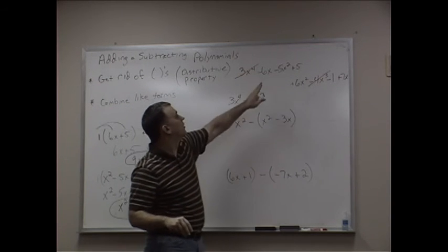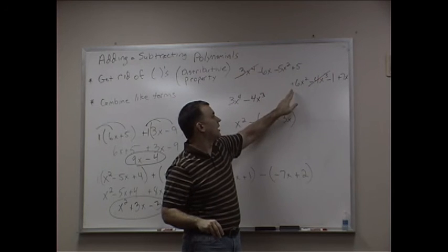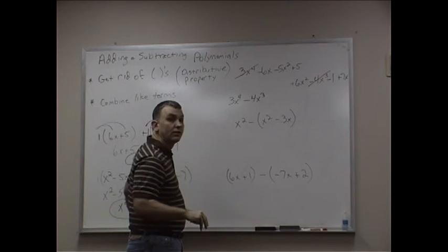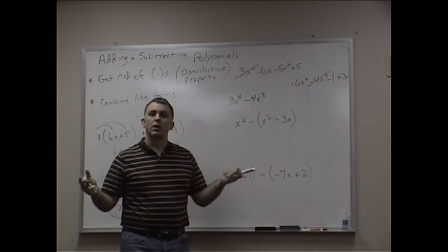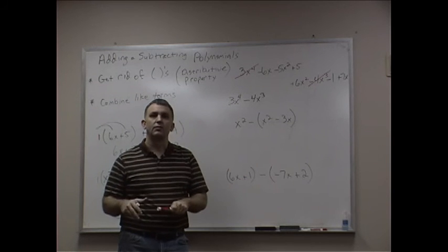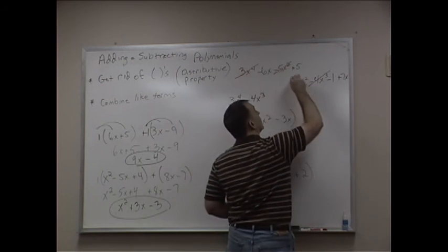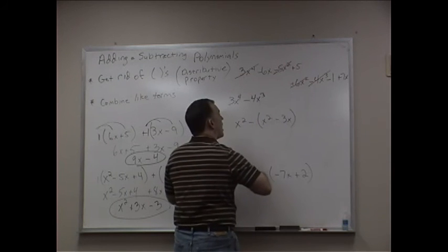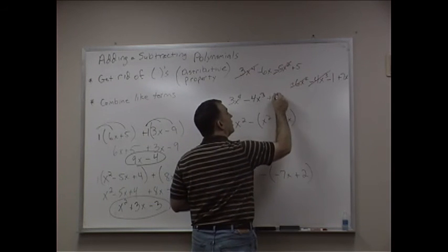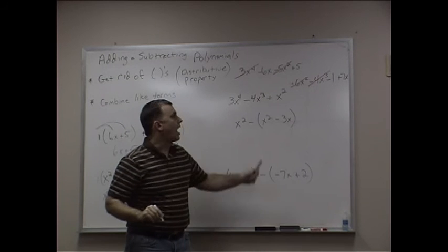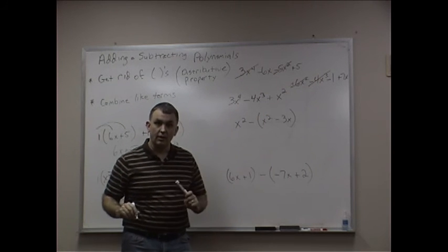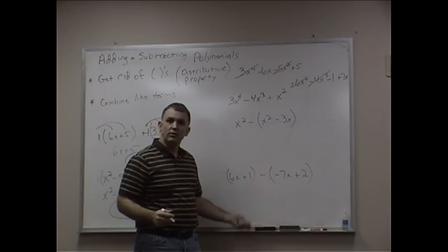x to the 2nds. We have a negative 5x to the 2nd, and a positive 6x to the 2nd. You've got two of them there. I'm going to combine negative 5 and positive 6. It's positive 1, isn't it? So since I've used those, now I'm going to write plus x to the 2nd. I didn't put the 1 in front of the x to the 2nd, did I? The 1 is understood.